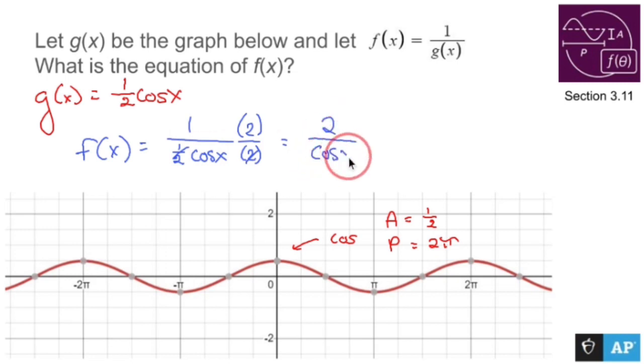When cos x is in the denominator, I could just move that up and make it secant x, and so that makes f of x equals 2 secant x.